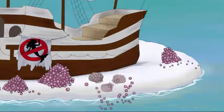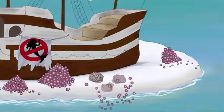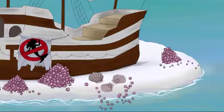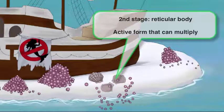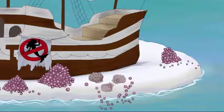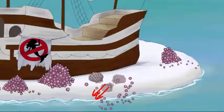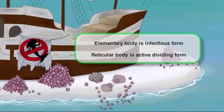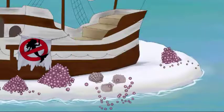Stage two is after the bacteria is inside the cell, or inside the clam. As you can see, the clam is split into two so we can see inside, and there are two pearls. This form is called the reticular body, and it's how the bacteria multiply through binary fission. The reticular body is the active form that can multiply, something the elementary body can't do. The final stage is the release of newly replicated bacteria out of the cell — now again in their elementary form, and this cycle repeats. In short, the elementary body is the infectious form and the reticular body is the active dividing form, or: elementary enters and reticular replicates.